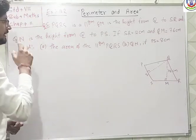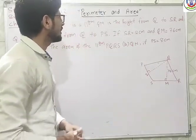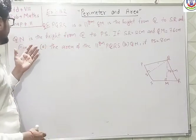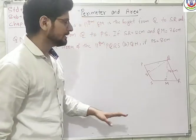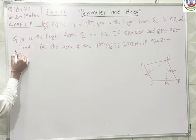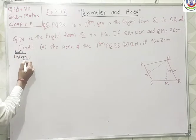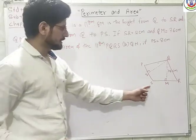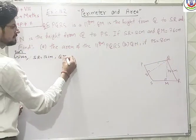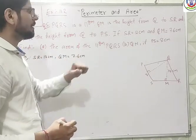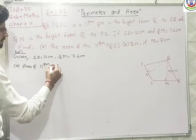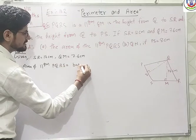Now our question number 5 is: PQRS is the parallelogram. QM is the height from Q to SR, and QN is the height from Q to PS. If SR is equal to 12 cm and QM is equal to 7.6 cm, then we have to find the area of the parallelogram. Area of parallelogram PQRS is equal to base multiplied by height.